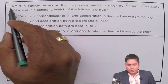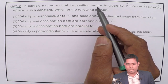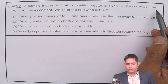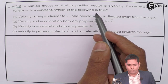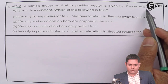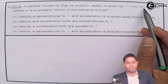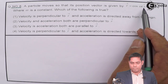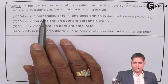Students, let us solve question number 8. A particle moves so that its position vector is given by r equals to this expression. The position vector of the particle is given where omega is a constant. The equation has components in the x-cap direction and y-cap direction — i-cap and j-cap. This is how the particle's position vector changes. You have to find which of the following is true.